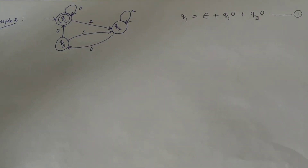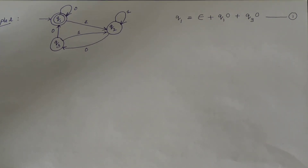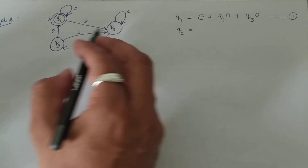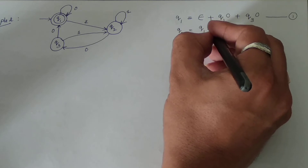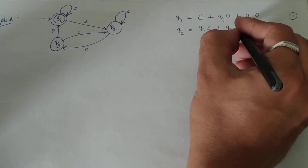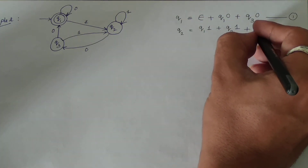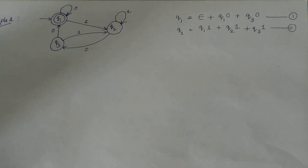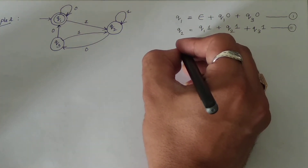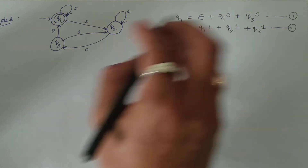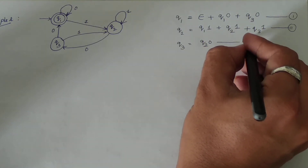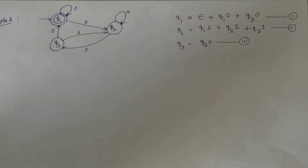Moving to the next state, q2: it has a transition from q1 with input symbol 1, giving q1·1. Then q2 again with transition for 1, giving q2·1. And one more from q3·1. This is equation number two. Now for q3: it has only one incoming edge from q2, giving q2·0. This is equation number three.